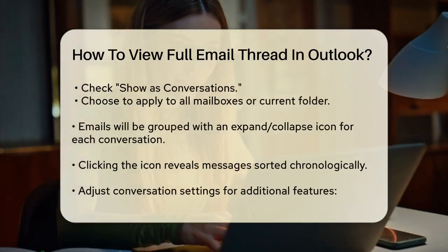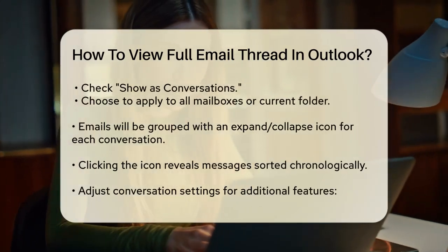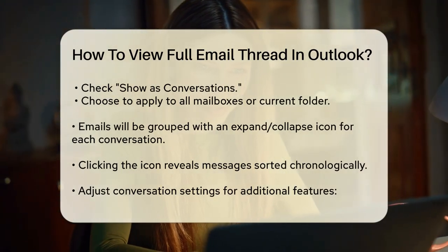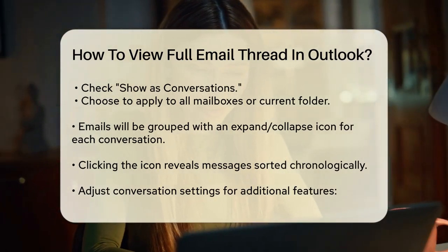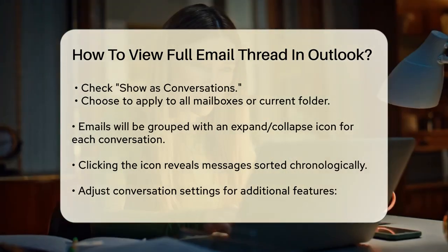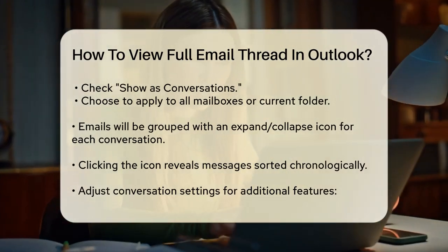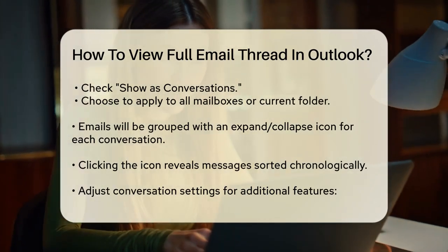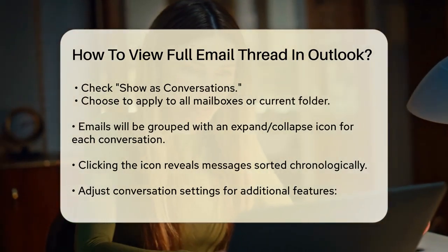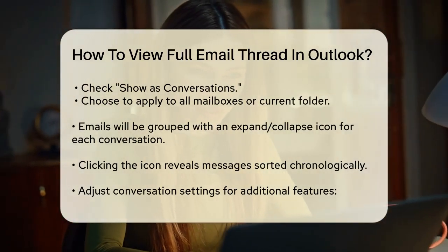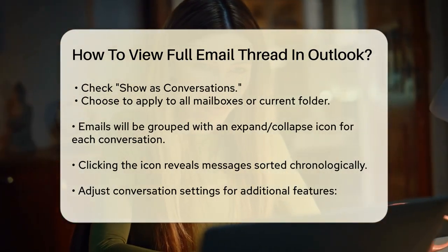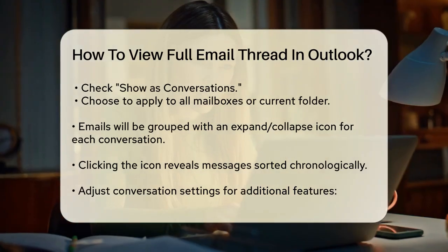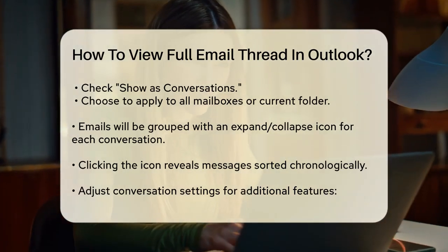Once you've enabled conversation view, you'll see emails grouped together by their subject lines. Each conversation will have a small expand/collapse icon next to it. Clicking this icon will show you all the messages within that conversation, sorted chronologically with the newest message at the top.